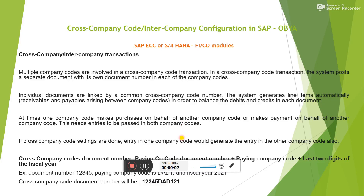Let us see today what is cross-company code or intercompany configuration in SAP. It is the most important configuration that every company code does in SAP because they do cross-company code transactions. For example, they have a company code in India and a company code in the US, but on behalf of one company code, another company code could make payments or post invoices. Balances between company codes need adjustment, and this happens between intercompany payables and intercompany receivables. The cross-company code document will be generated automatically once you have the right configuration, and it will have a link between the paying company code and the benefiting (receiving) company code.